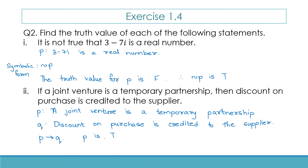But what about Q? Discount on purchase is credited to the supplier. The supplier is selling to the purchaser; at the time of purchase, the purchaser gets the discount — it is credited to the purchaser, not the supplier. So this statement is false. Q is false, and therefore we have true implies false, and therefore the given statement is false.